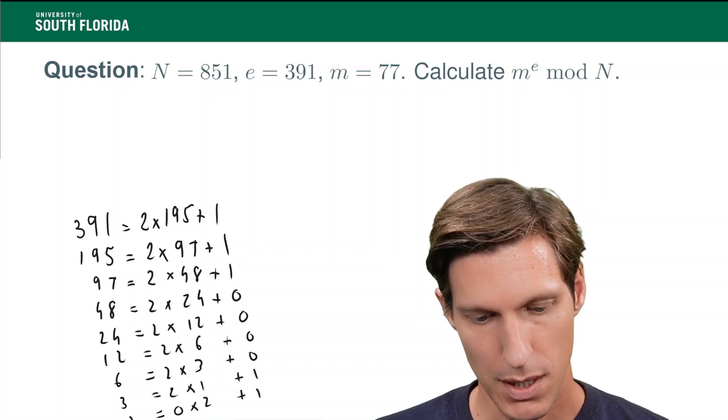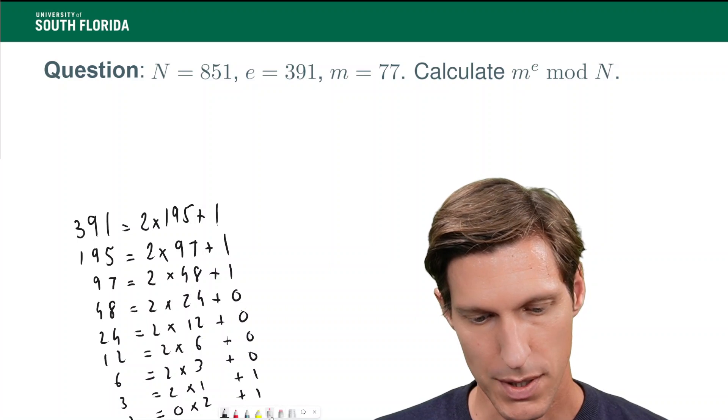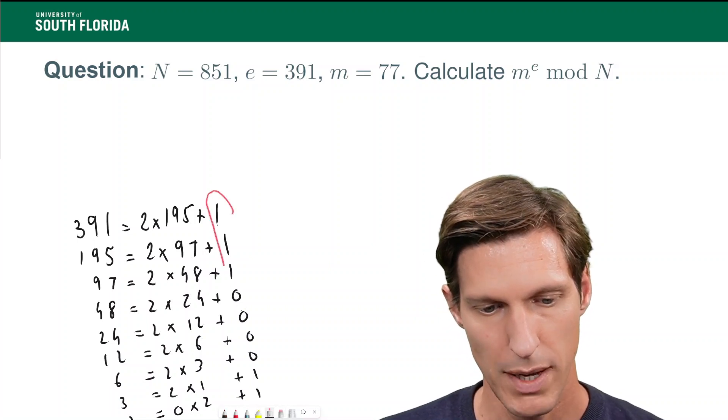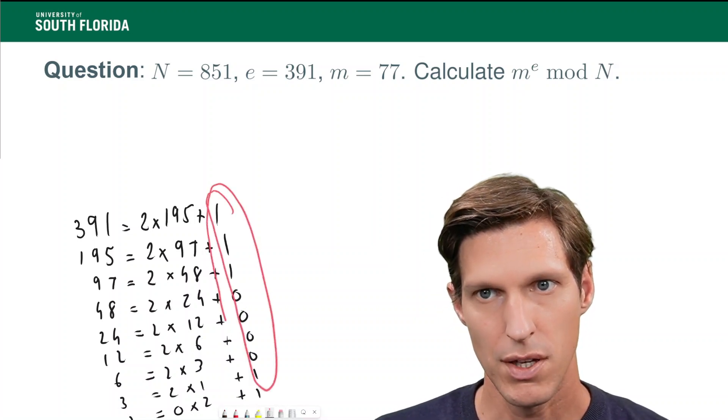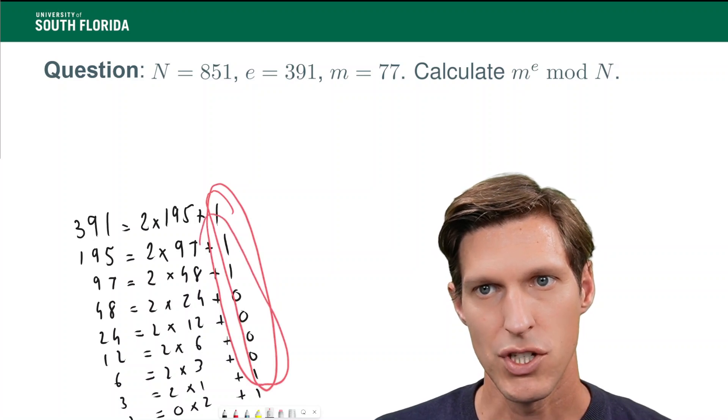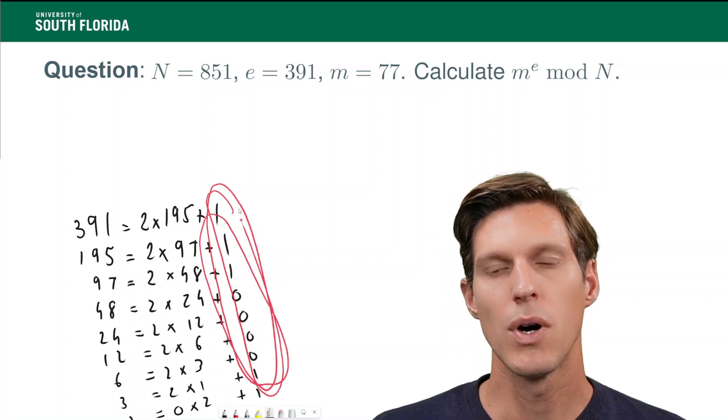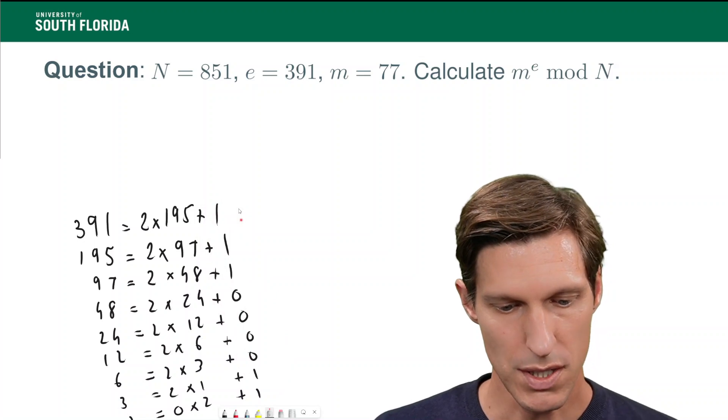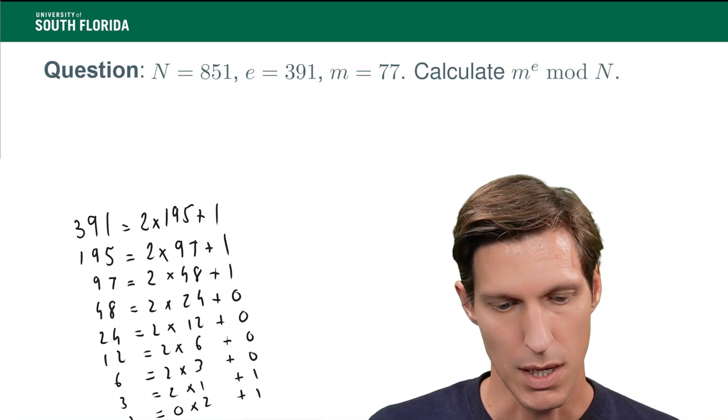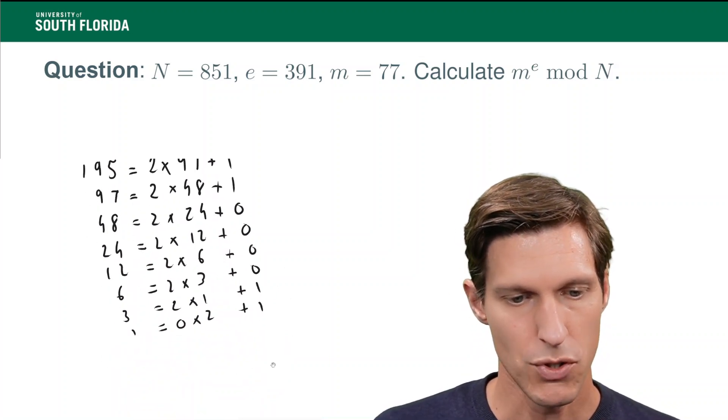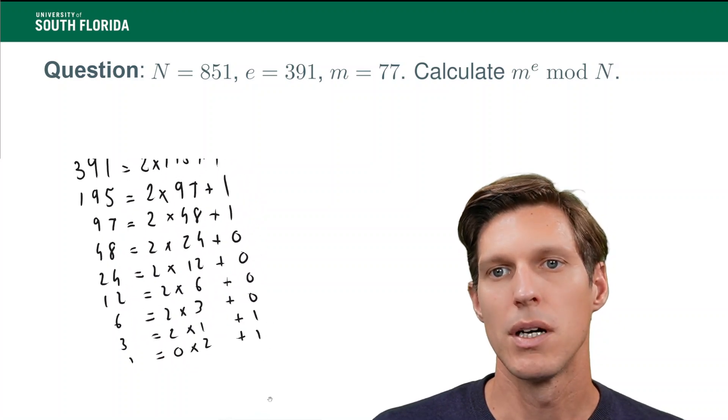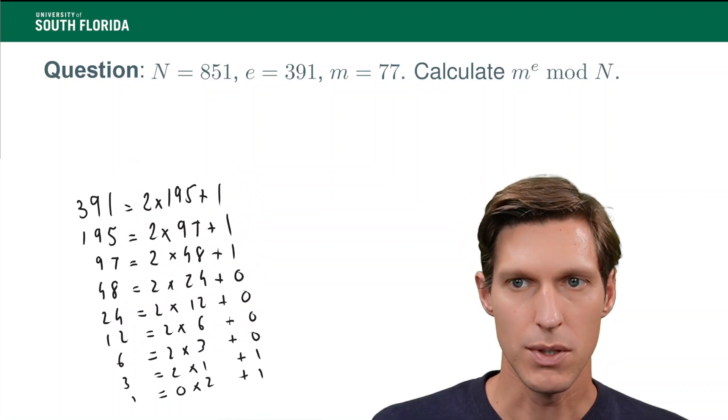Now, the sequence of remainders that I have here gives me the digits, from low order to high order. Now, how to see this, one way to see this, I'm just gonna write it down real quick, and we're gonna go back to that sequence.